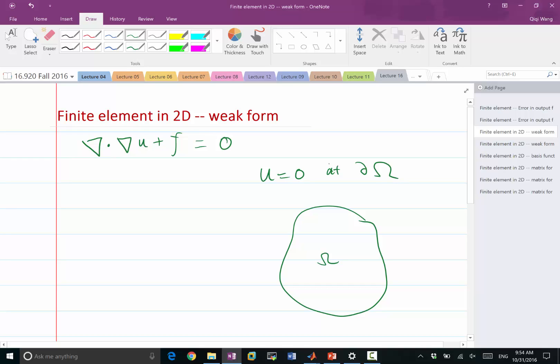We have a domain omega, and the boundary of the domain is called partial omega. So u equals 0 everywhere on the boundary. Here, for the purpose of simplicity in integrating the right-hand side, let's say f is also equal to 1 over the whole space. Even though the solution is going to be non-trivial, because for different geometry, the solution to this differential equation will have different shapes.